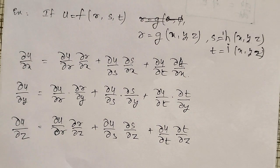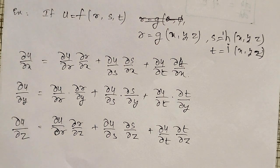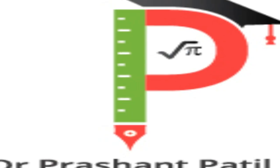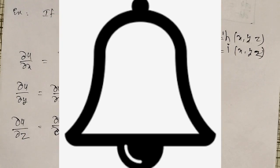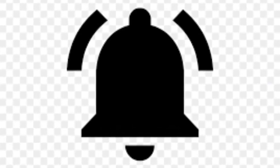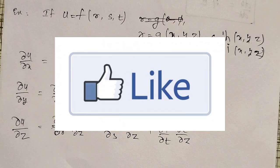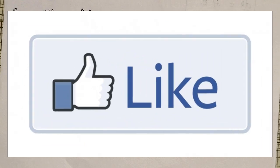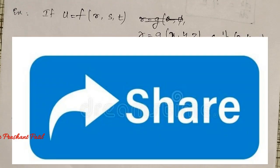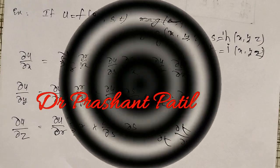Like that I can define chain rules if a function depends on any number of variables — we convert them into composite functions and then solve. In my next videos I am going to solve examples on how to convert a given function into a composite function and how to evaluate them. If you have not subscribed to my channel, please subscribe and don't forget to hit the bell icon so you get notifications. Like, comment, and share this video. Thank you friends!